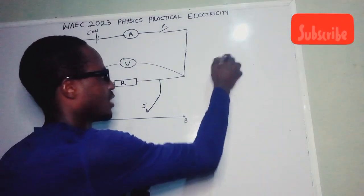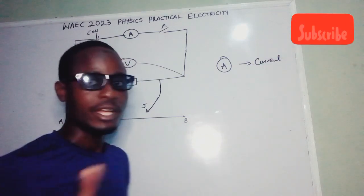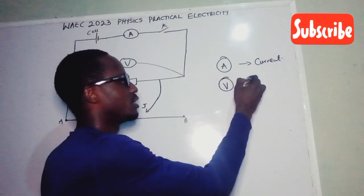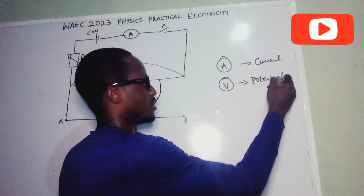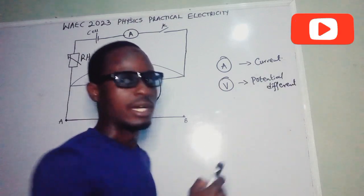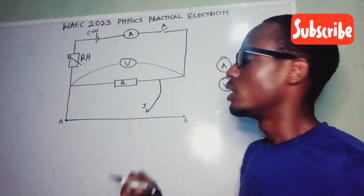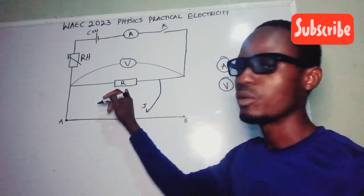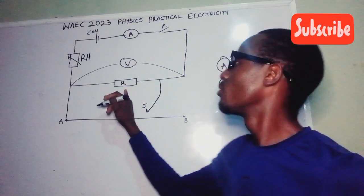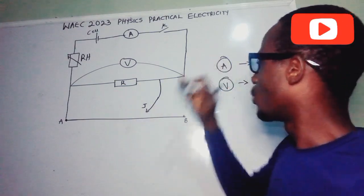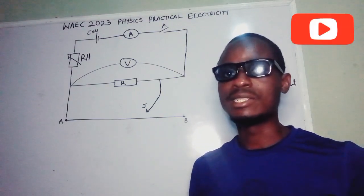In this circuit we have an ammeter, which is meant to measure electric current. We also have a voltmeter, which is meant to measure potential difference — that is the function of the voltmeter in the experiment. We have a rheostat, which is a form of resistor that offers resistance to current, and another resistor of unknown value whose value is going to be determined. Then we have the meter bridge, which is made with a constant wire that has its own resistance.